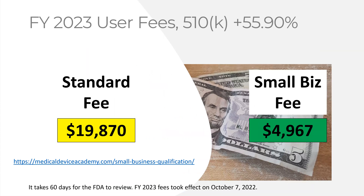Another thing that changed is a big price increase. Just like gas prices and housing prices going up, FDA user fees have gone up. Most user fees went up by roughly 17.9%, but the 510k fees went up 55.9% — a huge increase. The de novo increased at the same rate as others, about 17.8%. The small business fee is now almost $5,000 and the standard fee is $19,000. If you apply for small business qualification and the FDA grants it, you will save almost $15,000. That's a very big increase that's going to affect some companies.